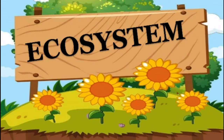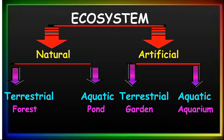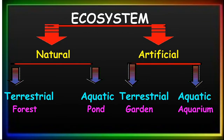Now let's move on to the next topic: ecosystem. What is ecosystem? Ecosystem is a community of living and non-living things that work together. Each part of an ecosystem has a role to play. Any changes in the environment such as increased temperature or heavy rain can have a big impact on an ecosystem. Ecosystem can be either natural or artificial.